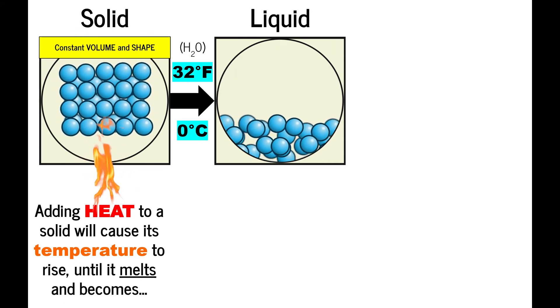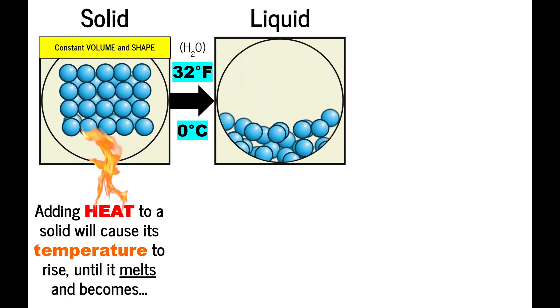Notice that the liquid's molecules have more energy. The additional energy that they gained allows them to smoothly glide around, so they have a constant volume, but not a constant shape.